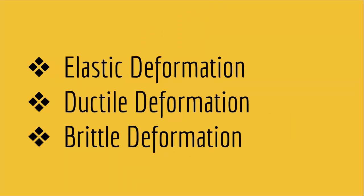Just like that, we have three stages of deformation. Elastic deformation is the stage where you pull the spring and it comes back to its original shape. Ductile deformation is the stage where you pull the spring so hard that it doesn't come back to its original shape. And brittle deformation is the stage where you pull the spring so hard that it breaks. Just like that, rocks subjected to stress go through elastic deformation, then ductile deformation, and then eventually they break.